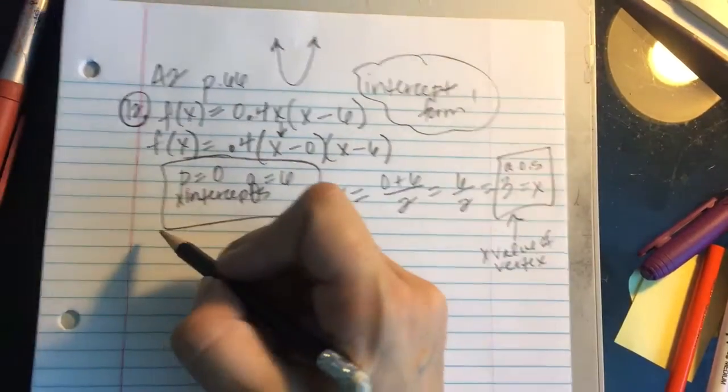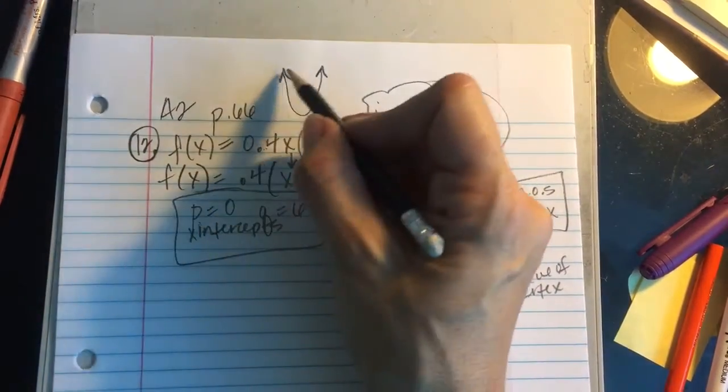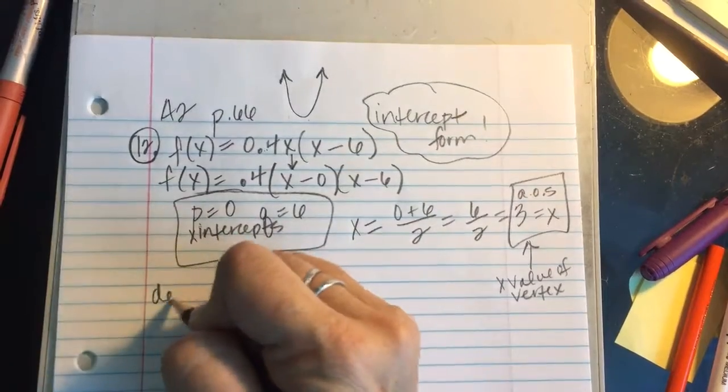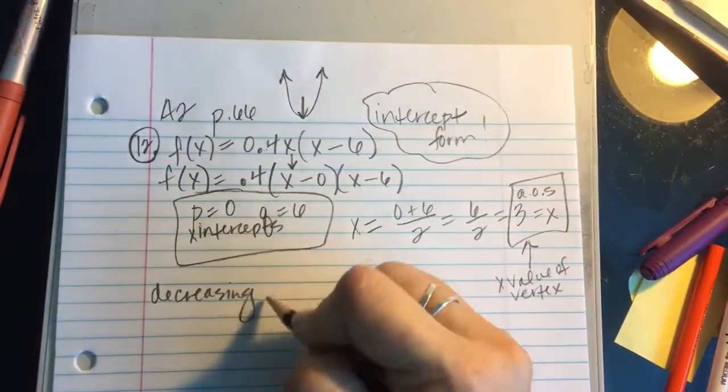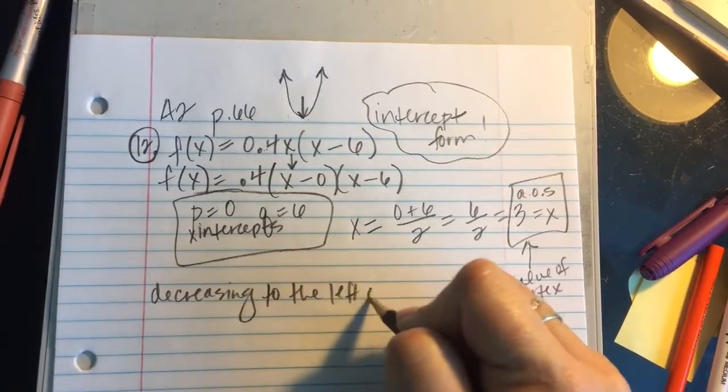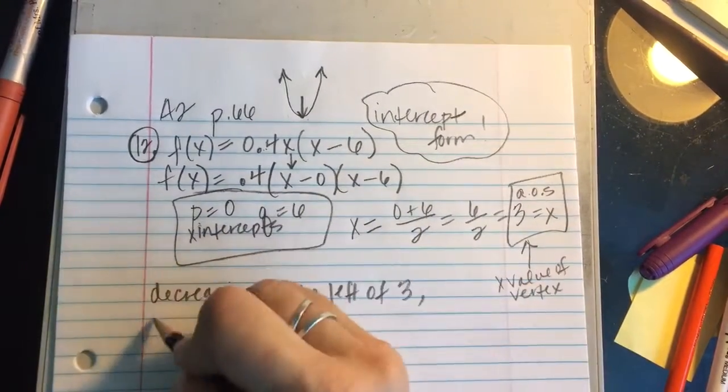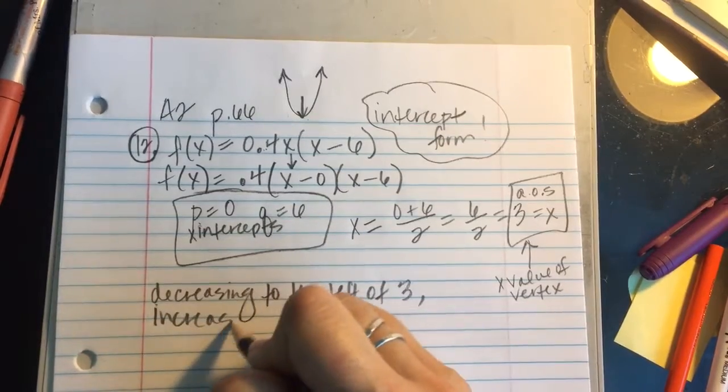And since this parabola is opening up, I'm going to say that it is decreasing to the left of 3 and it's increasing to the right of 3.